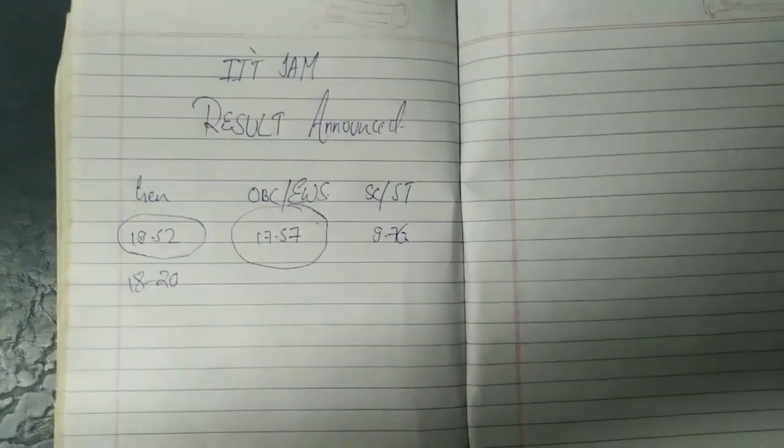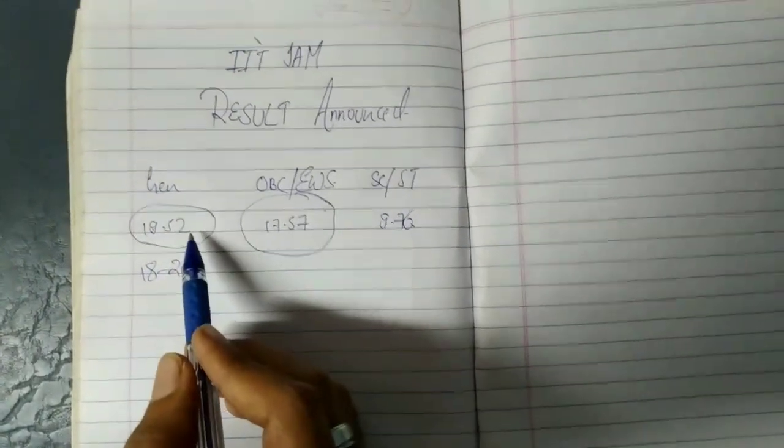So now, you are going to relax, how many ranks are there. Which college you'll get, which IIT you'll get. Will you find a case of counseling procedure, everything, with all the details, I will tell you. The general cut-off was 19.52.